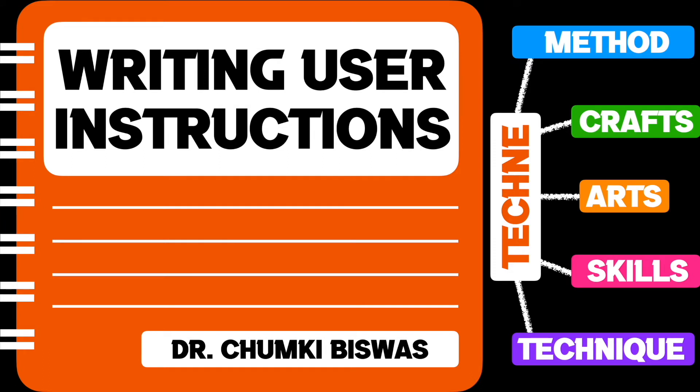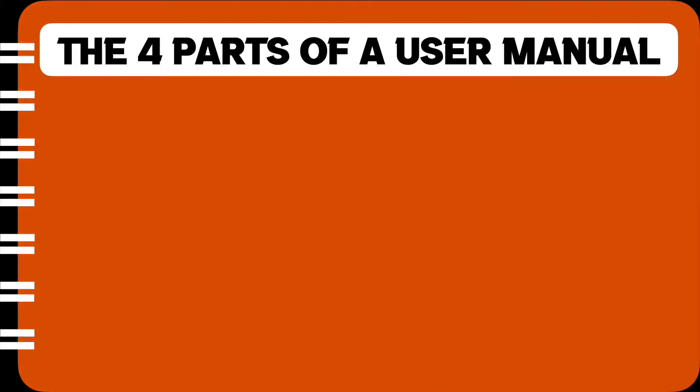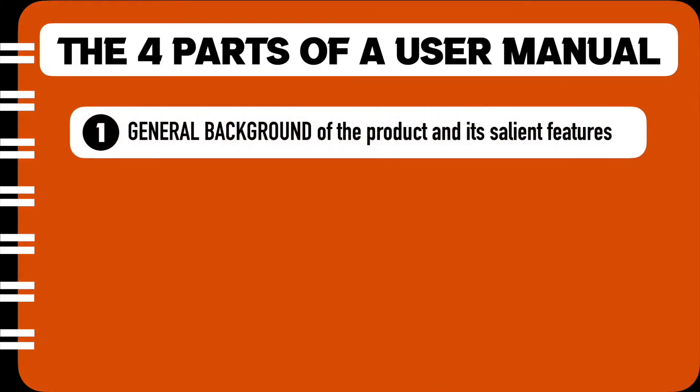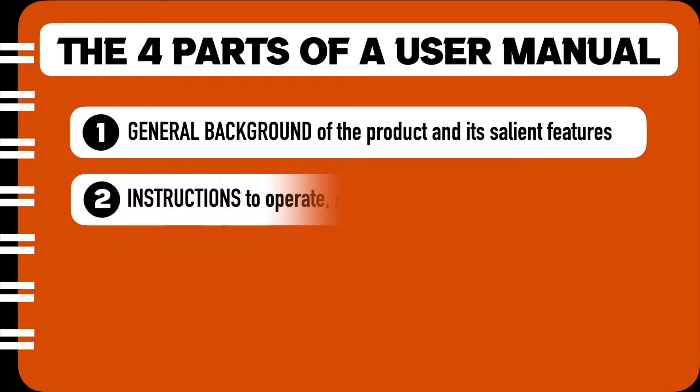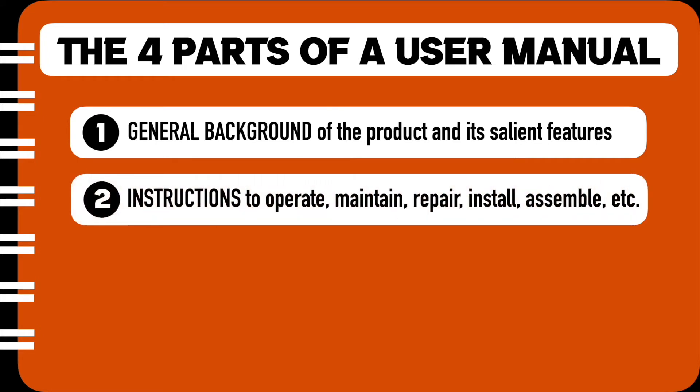User instructions are not written in isolation. They are always written as part of a user manual. Let us look at the different parts of a user manual. The first part gives a general background of the product and some of its salient features. The second aspect of a user manual is always the instructions, whether to operate, maintain, repair, install, assemble, etc.